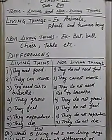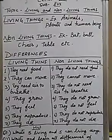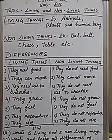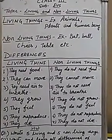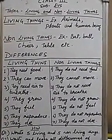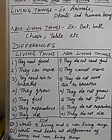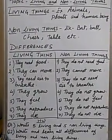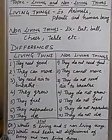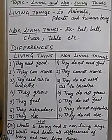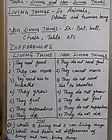Living things like animals, plants, and human beings are living things. And things like bag, ball, chair, table, fan, etc. are non-living things. Some are living things and some are non-living things. But how do you know which are living and which are non-living things? Living things differ from non-living things in many ways.